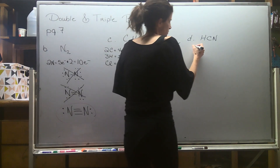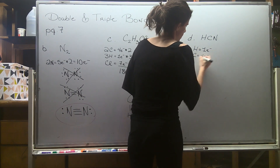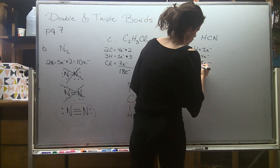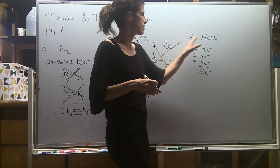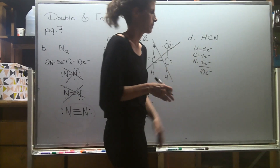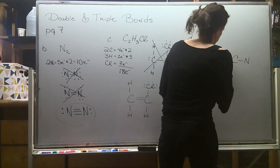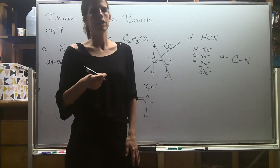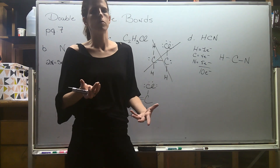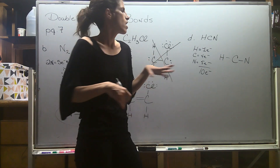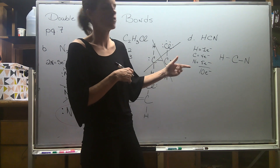Next one: hydrogen gives one electron, carbon four, nitrogen five electrons, for a total of 10 electrons. I'm going to put carbon in the middle because it's the least electronegative, and hydrogen just can't be in the middle. I always like to satisfy the octets first — sometimes you're not going to have a double or triple bond, so you're done. Start by filling out the octets assuming just single bonds.